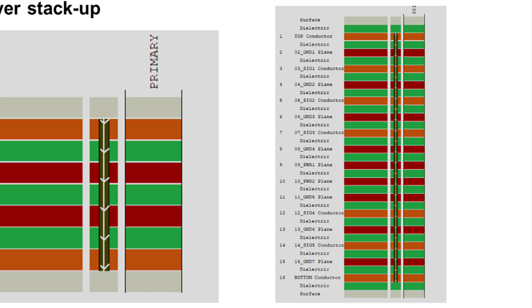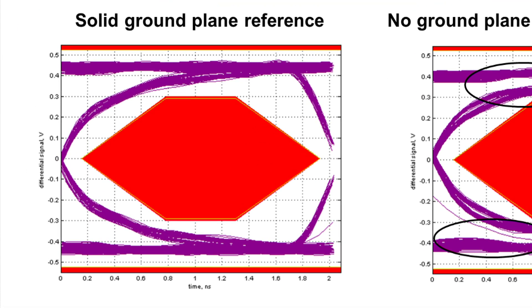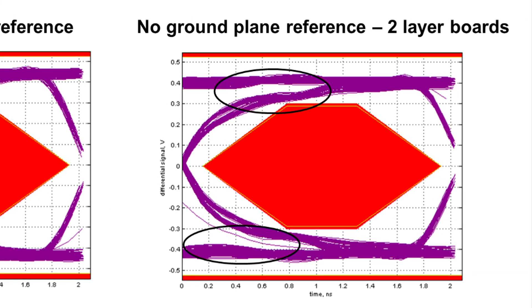If layer to layer trace routing is required, the number of vias should be minimized. Differential pair vias should be symmetric and have accompanying ground vias to maintain ground return paths. Here's an example of a non-ideal PCB stack and how it impacts signal quality. On the left is an eye diagram from a PCB stack up with a differential pair routed over a solid ground plane. On the right is an eye diagram for a two-layer PCB without a solid ground plane reference using only ground fills near the differential pairs.